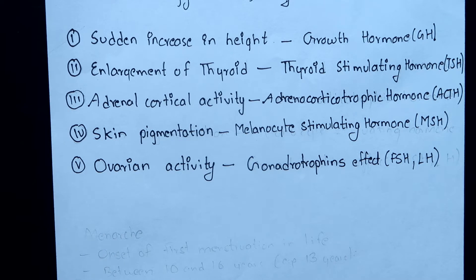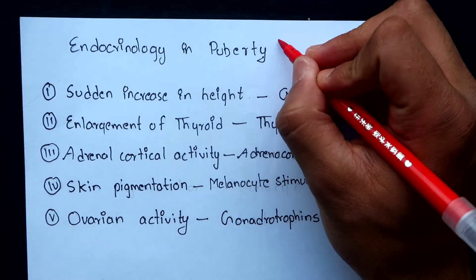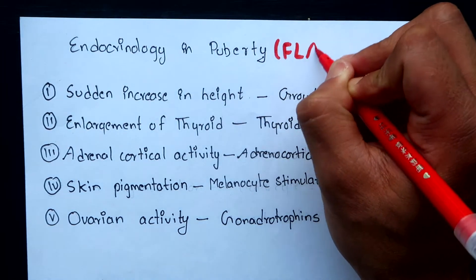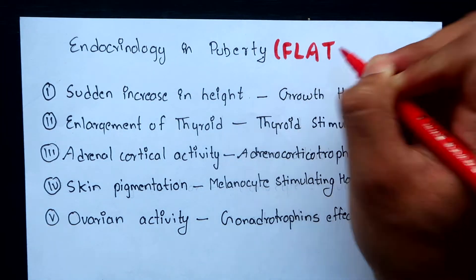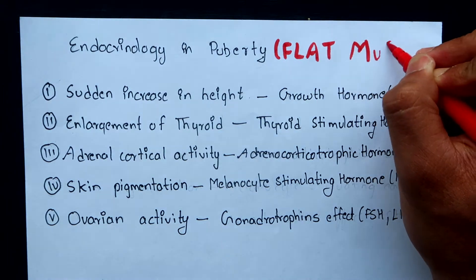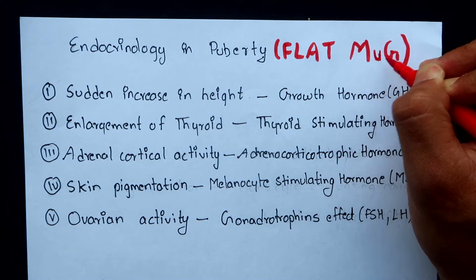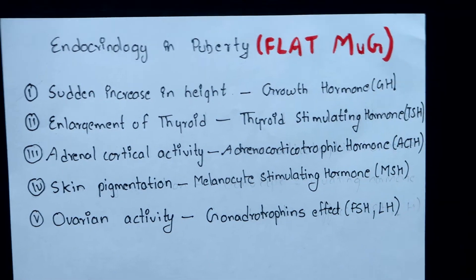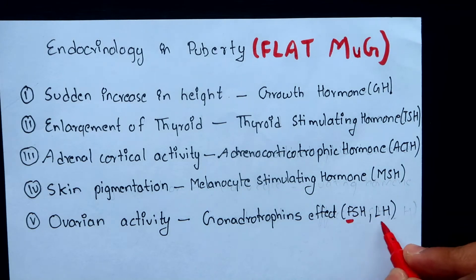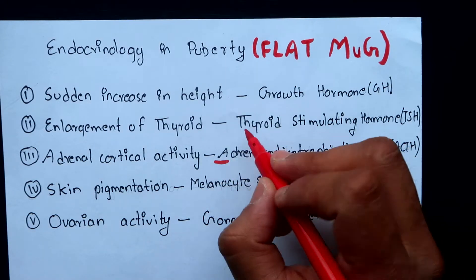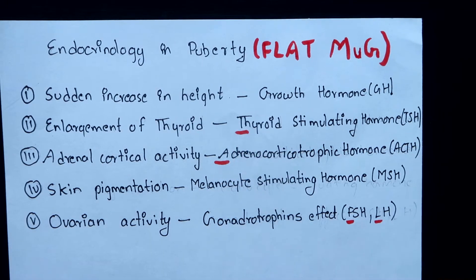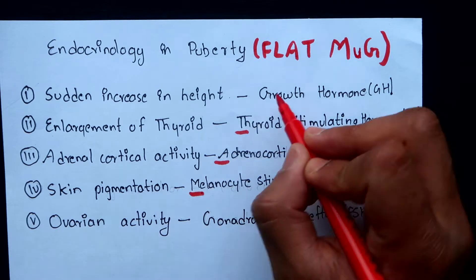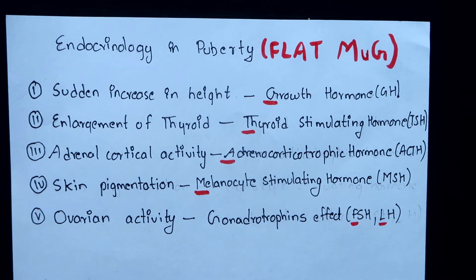If you want to remember these changes, I have made a mnemonic: FLAT MUG. F stands for follicular stimulating hormone, L for luteinizing hormone, A for adrenocorticotrophic hormone, T for thyroid stimulating hormone, M for melanocyte stimulating hormone, and G for growth hormone.